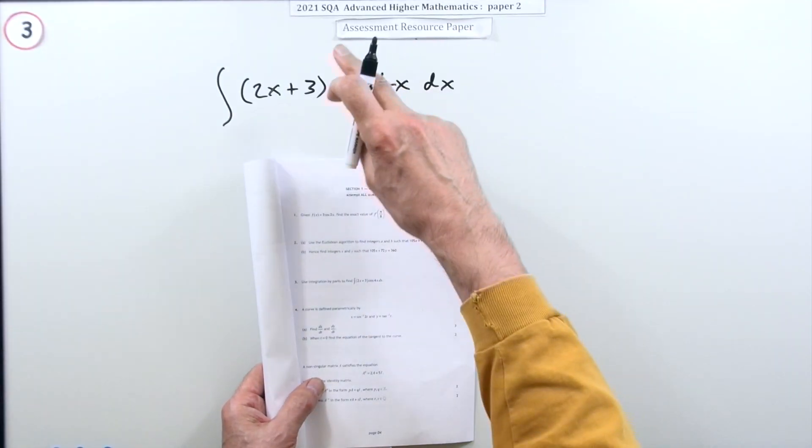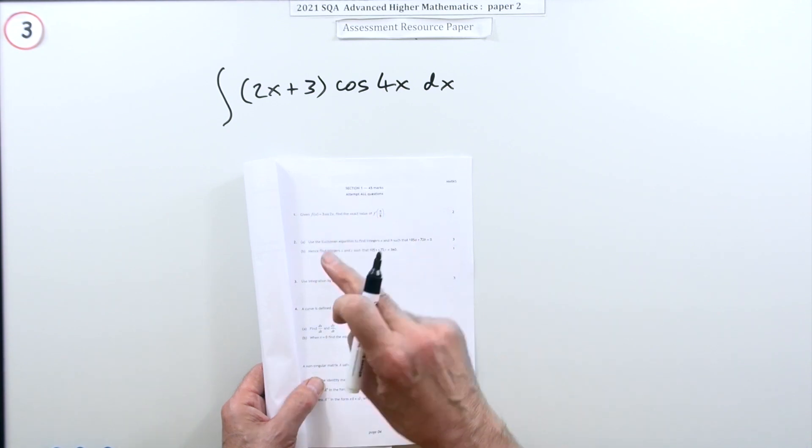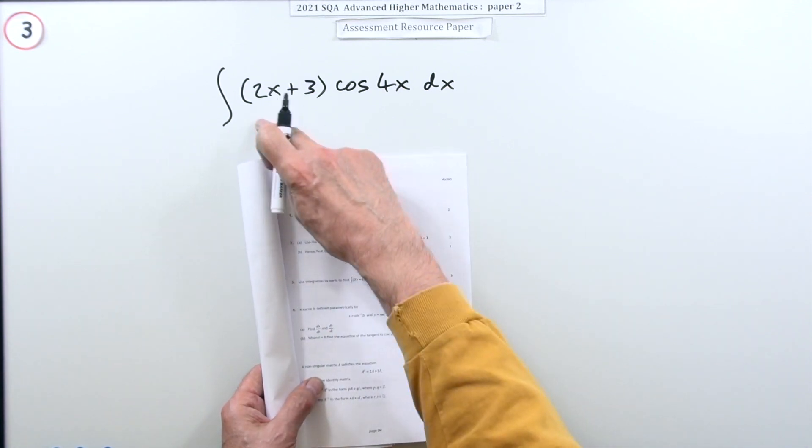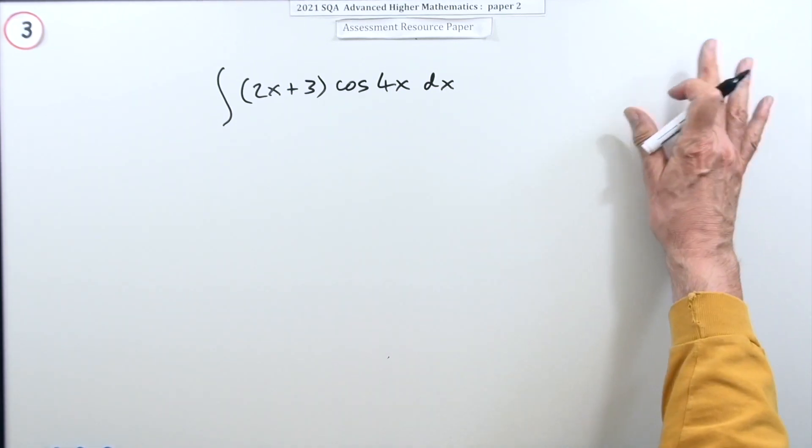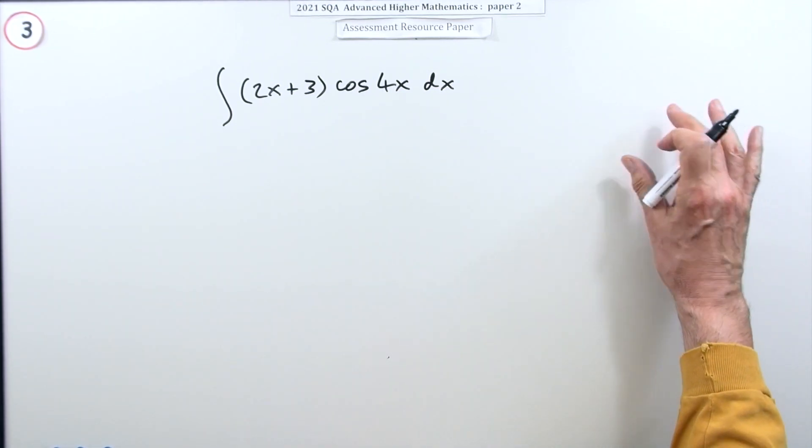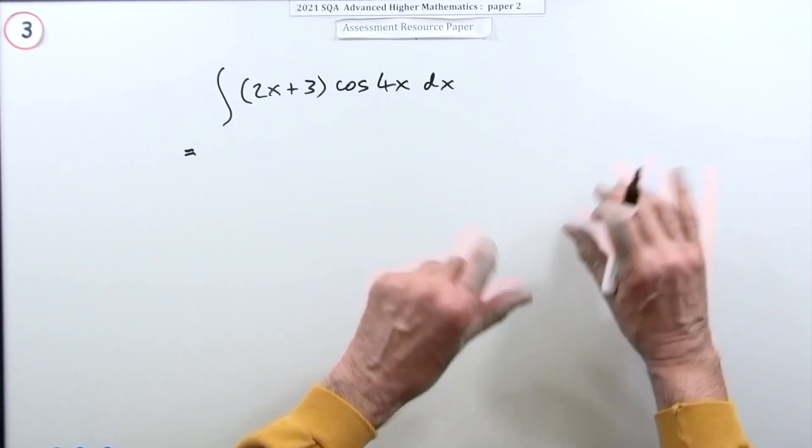So number three from paper two of the 2021 Advanced Higher Math resource paper. Three marks for using integration by parts to find this integral. Now I'm not going to put the u's and v's down at the side. I don't see the point of doing everything twice. You can do that if you wish, if that's what you're comfortable with.